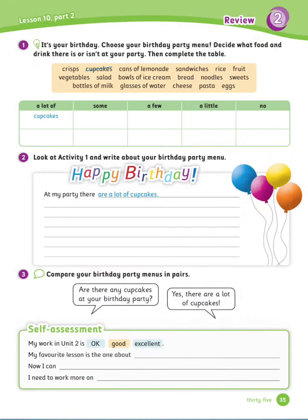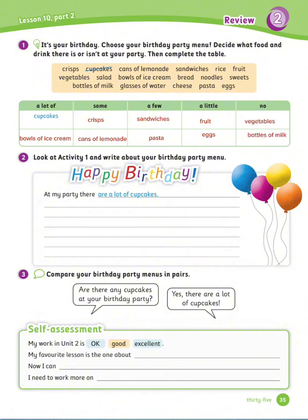Let's go shopping. Lesson 10, part 2. Exercise number 1: It's your birthday. Choose your birthday party menu. Decide what food and drink there is or isn't at your party, then complete the table. I'll show you my answers as an example: a lot of cupcakes and bowls of ice cream, some crisps and cans of lemonade, a few sandwiches and pasta, a little fruit and eggs, no vegetables and bottles of milk.